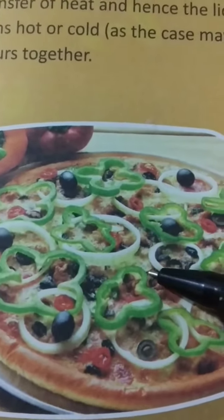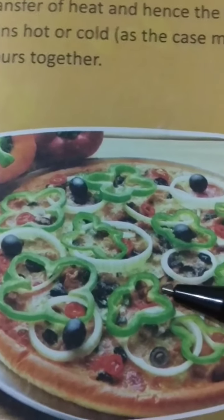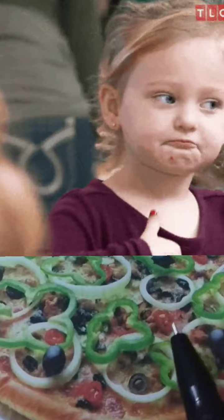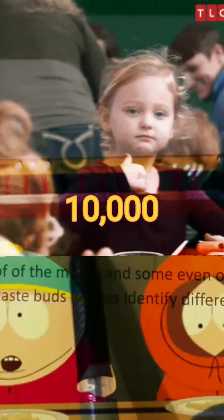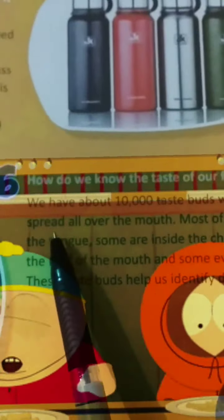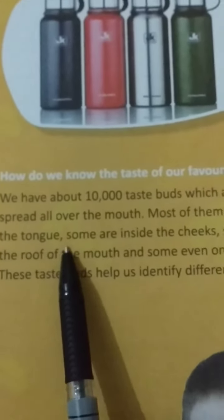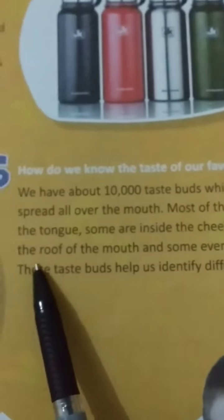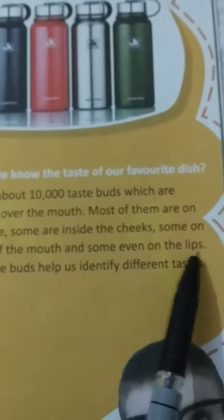How do we know the taste of our favorite dishes? We know due to the taste buds present on the tongue. We have 10,000 taste buds, which are spread all over the mouth. Most of them are on the tongue. Some are inside the cheeks, some on the roof of the mouth, and some even on the lips.